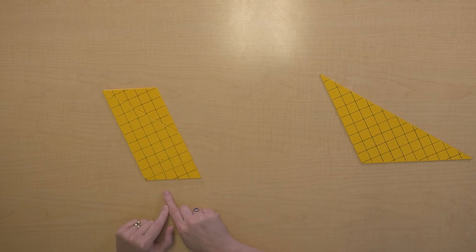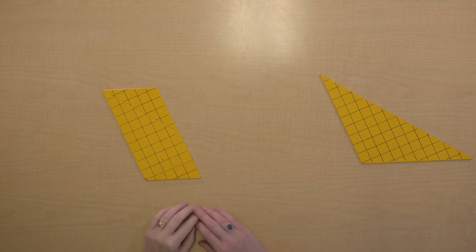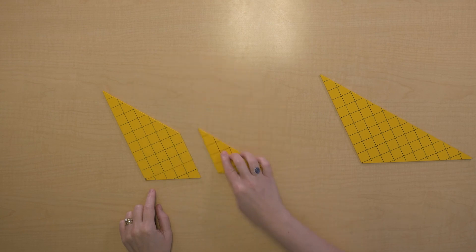Now I've made a parallelogram and we know a parallelogram is base times height. Now what happened to the triangle when we did this?